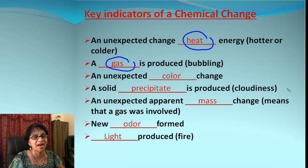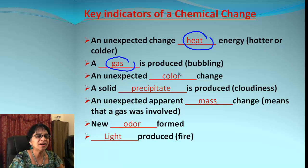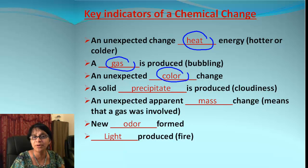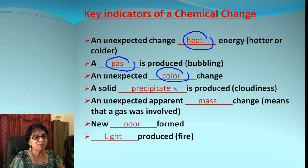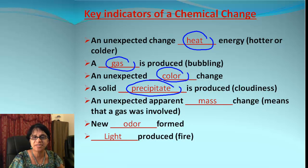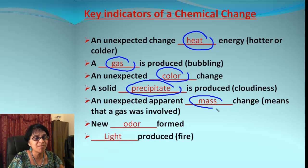Sometimes there could be some bubbles coming out of your reaction, and that could be because of a gas being released. Then there could be an unexpected color change — from maybe colorless to blue, or from blue to yellow, and so on. Sometimes we might have clear liquids to begin with and end up having a precipitate.